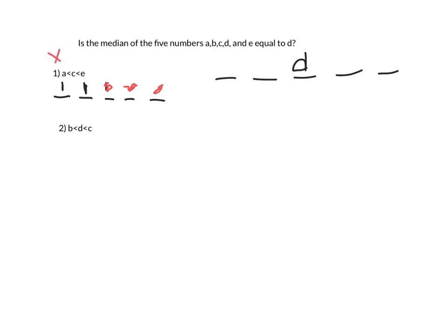Now look at clue two. You've got five numbers. Well, B could be here, D could be here, and C could be here. See what I'm saying? That didn't help us.